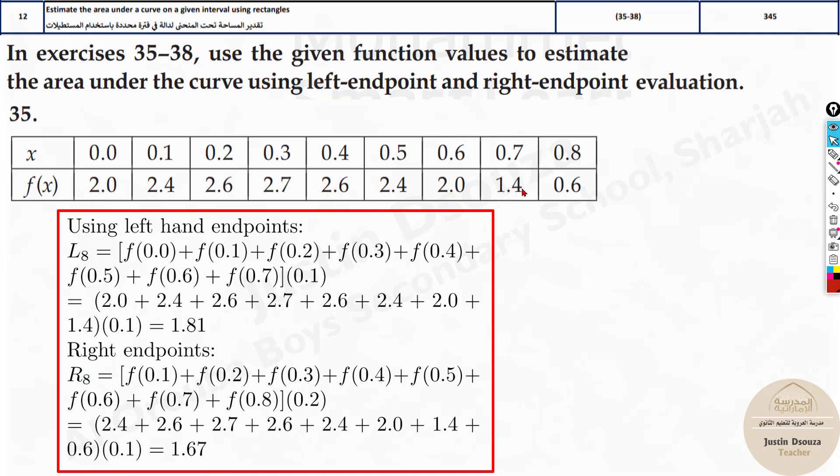And the same thing with the right endpoint: you can start with 2.4 because you're leaving the first value, the leftmost value. You can either do 0.6 plus 1.4 or 2, or you can start from the second value and add up all and multiply it with 0.1.